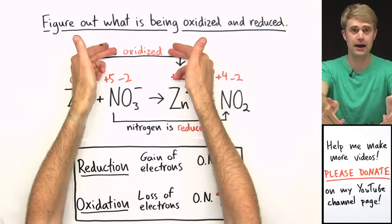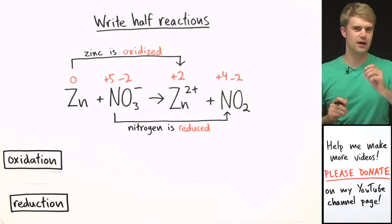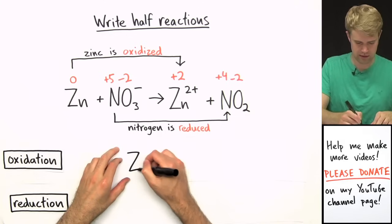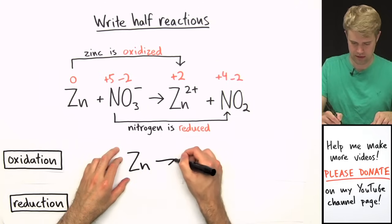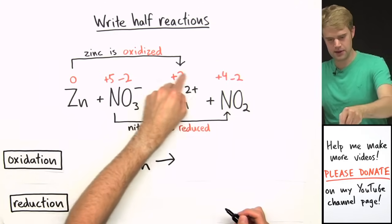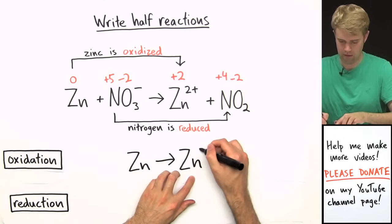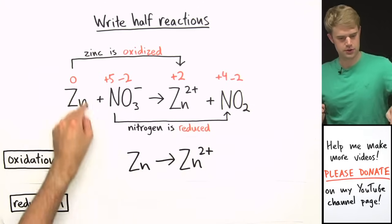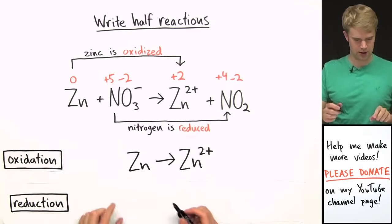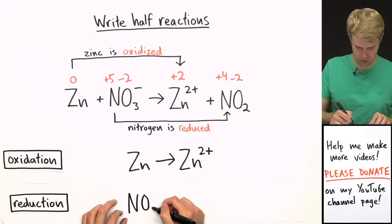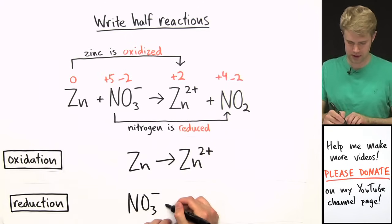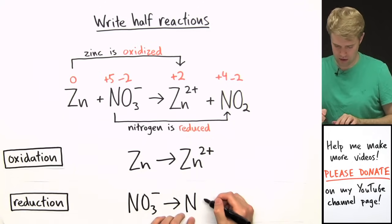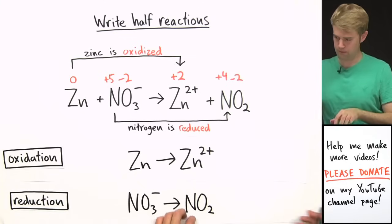Now let's write half-reactions for the oxidation and the reduction. The oxidation half-reaction is Zn → Zn²⁺. Nitrogen is getting reduced, so the reduction half-reaction has NO₃⁻ on the left side, then the arrow, and NO₂ on the right side.